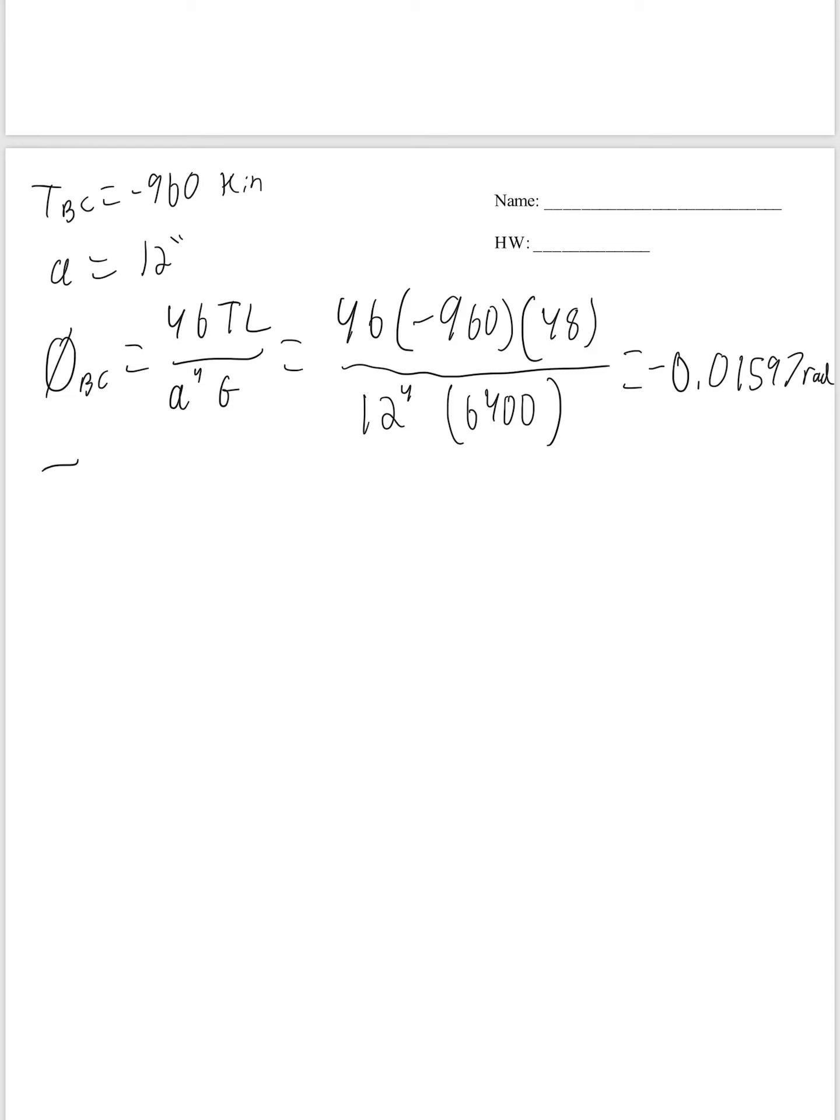And then the shear stress, we're given that equation as well as 20T over A cubed. So we get 20 times the torque of 960, divided by 12 cubed. That gives us 11.11 KSI.